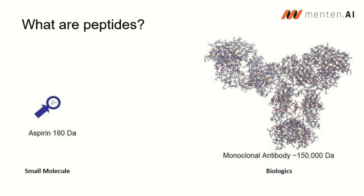Most of the drugs that have been approved and you are most likely to have come across are small molecules such as aspirin. Aspirin is a pretty small molecule — in fact, it's around 180 Dalton in size. By contrast, a monoclonal antibody such as Humira is 150,000 Dalton. So you can get a sense of the difference in sizes here.